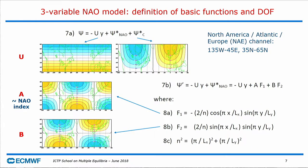Now we have the ingredients: the positive feedback and the negative one. We try to put them together in the simplest possible way. We have a channel covering the Atlantic sector I described. As in many low-order models, we have three degrees of freedom — one for the strength of the zonal wind and one for the wave. The difference from the Charney-DeVore model is that the Charney-DeVore channel was a closed channel, with zero meridional fluxes at boundaries.